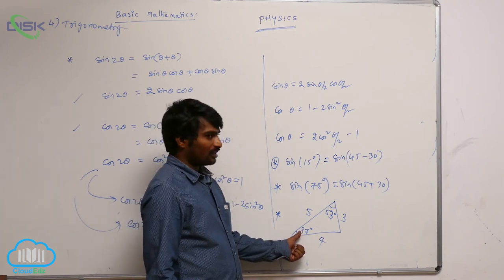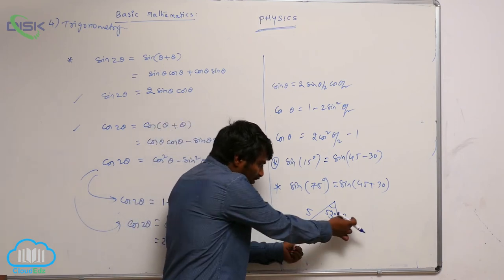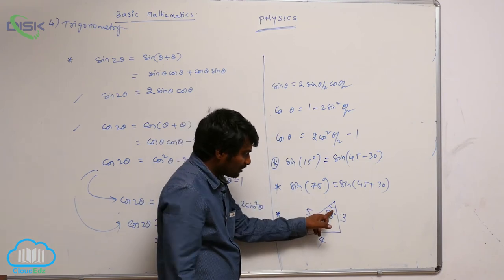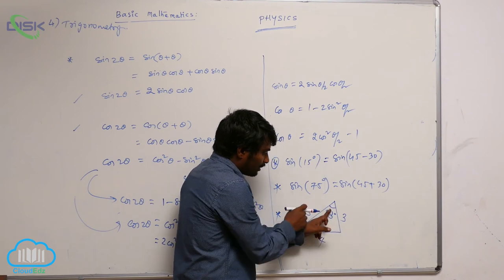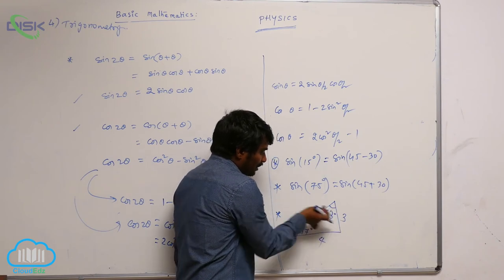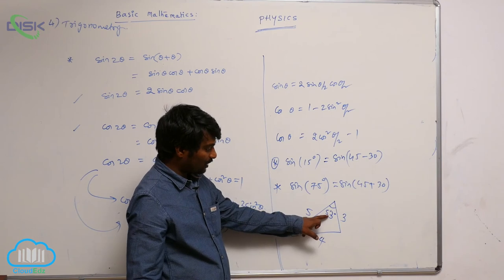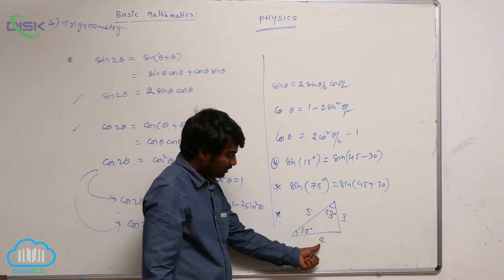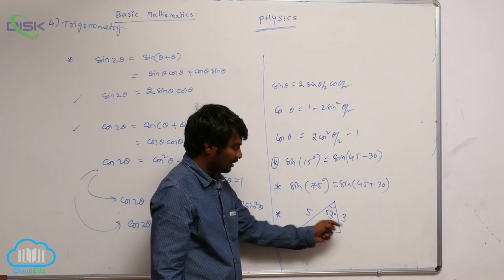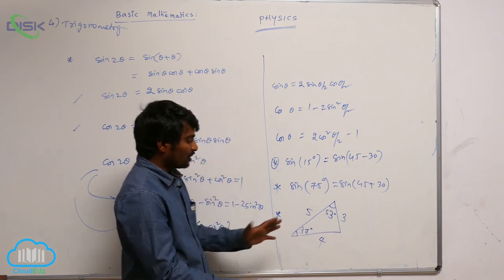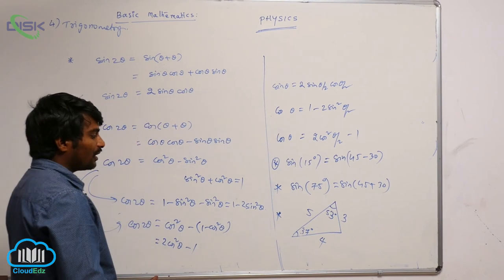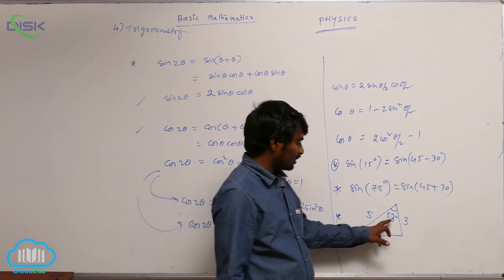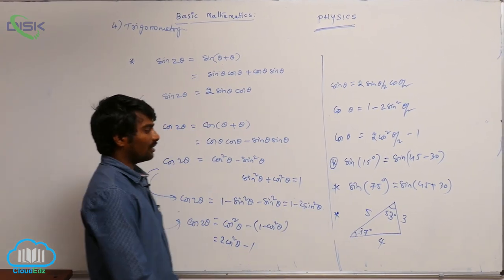So sin 37° = opposite/hypotenuse = 3/5. cos 53° = adjacent/hypotenuse = 3/5. tan 53° = opposite/adjacent; for 53 degrees opposite is 4 and adjacent is 3, so tan 53° = 4/3. In this way we can calculate any trigonometric ratio for 37 degrees and 53 degrees.